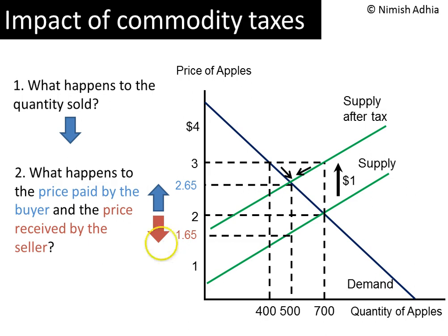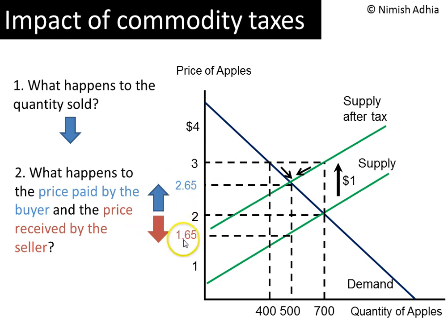Quick recap: whenever there is a commodity tax, it reduces the quantity sold of that good, increases the price paid by the buyers, and reduces the price received by the seller. Whenever there is a tax, the price paid by the buyer is different from the price received by the seller, and the difference between the two is exactly equal to the amount of the tax — which is $1.